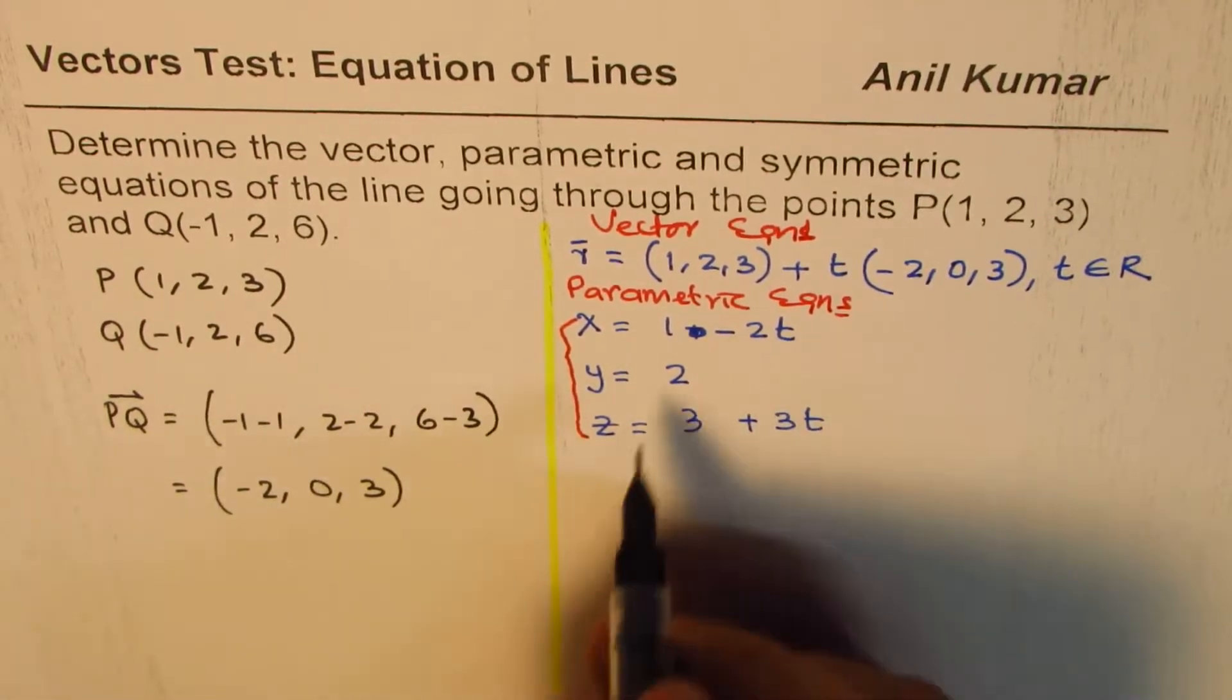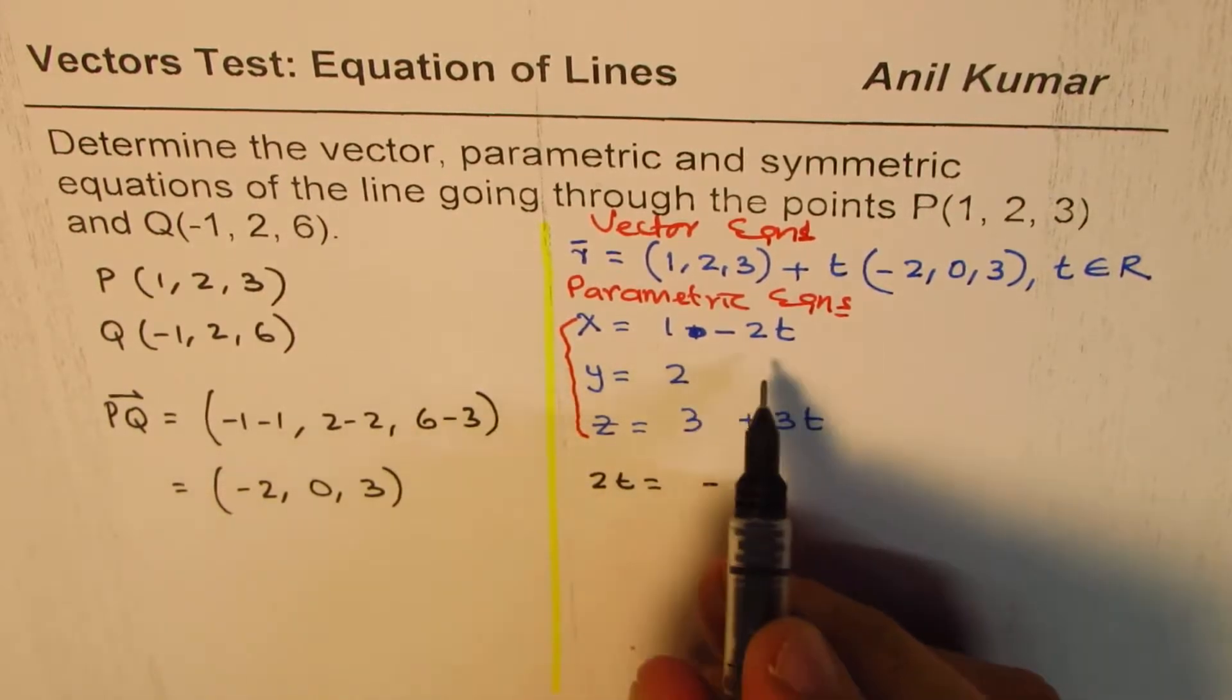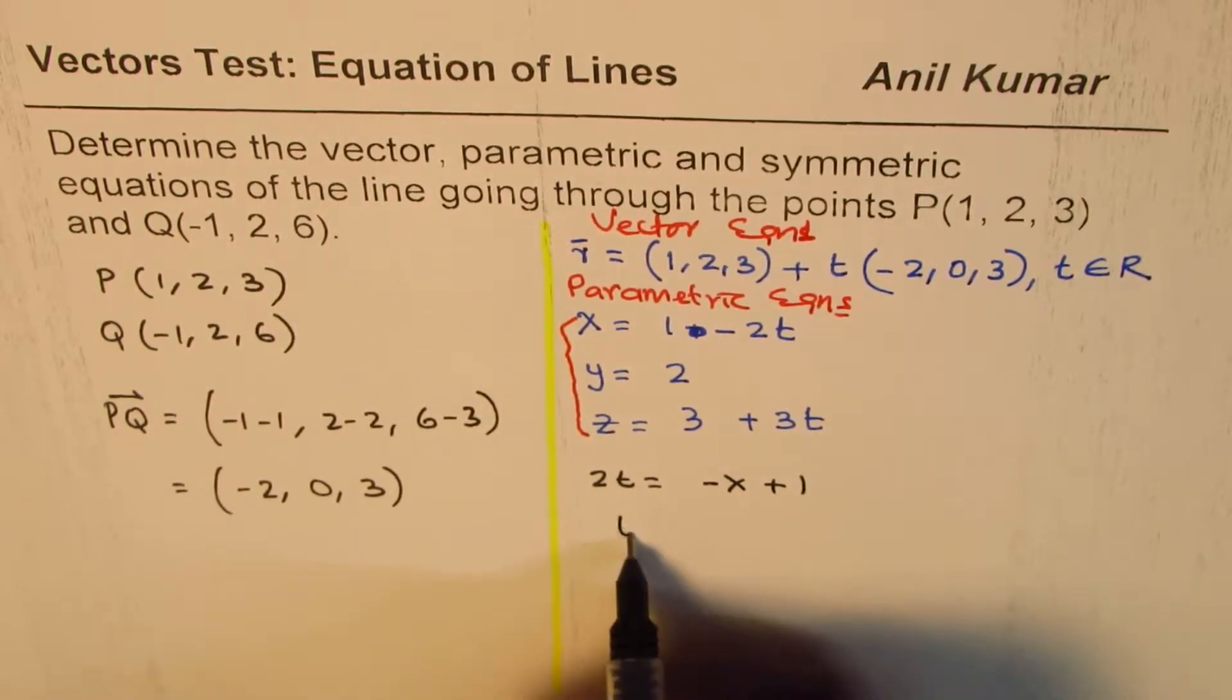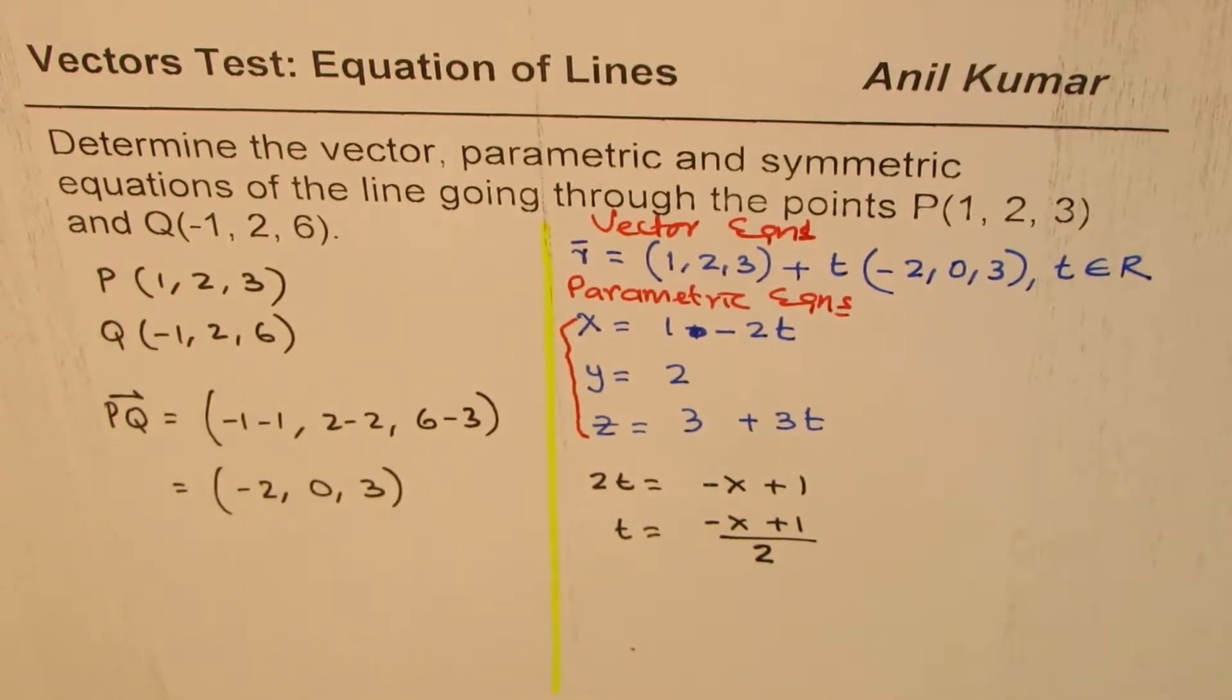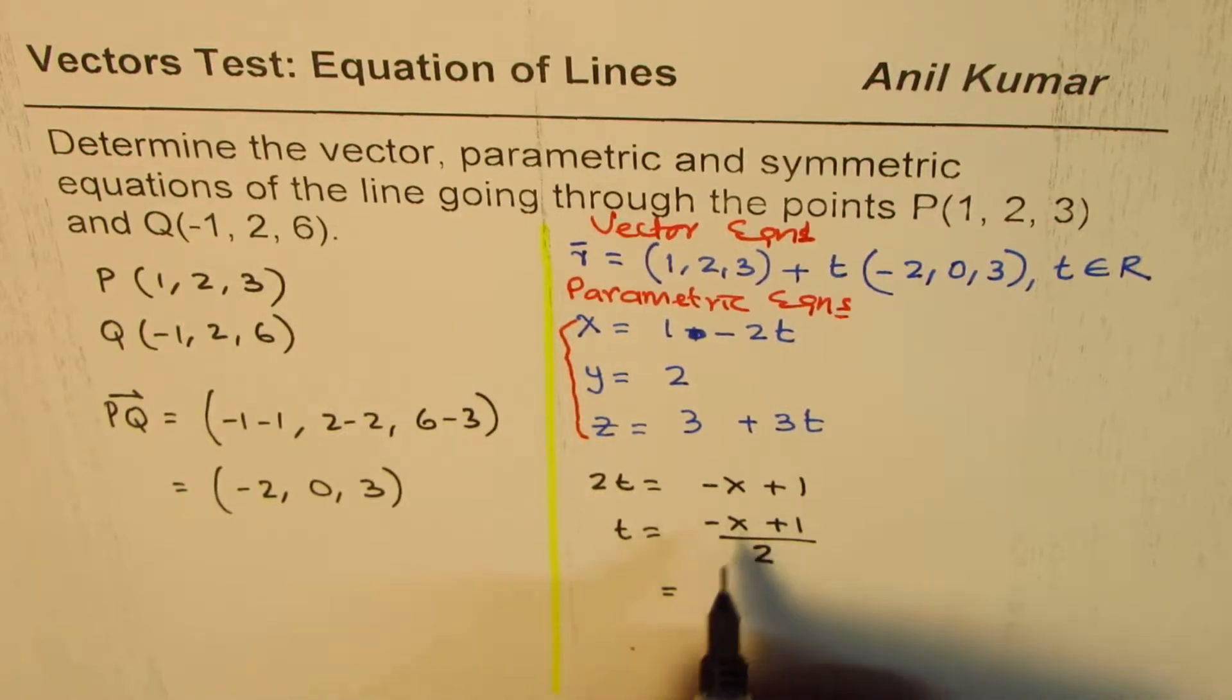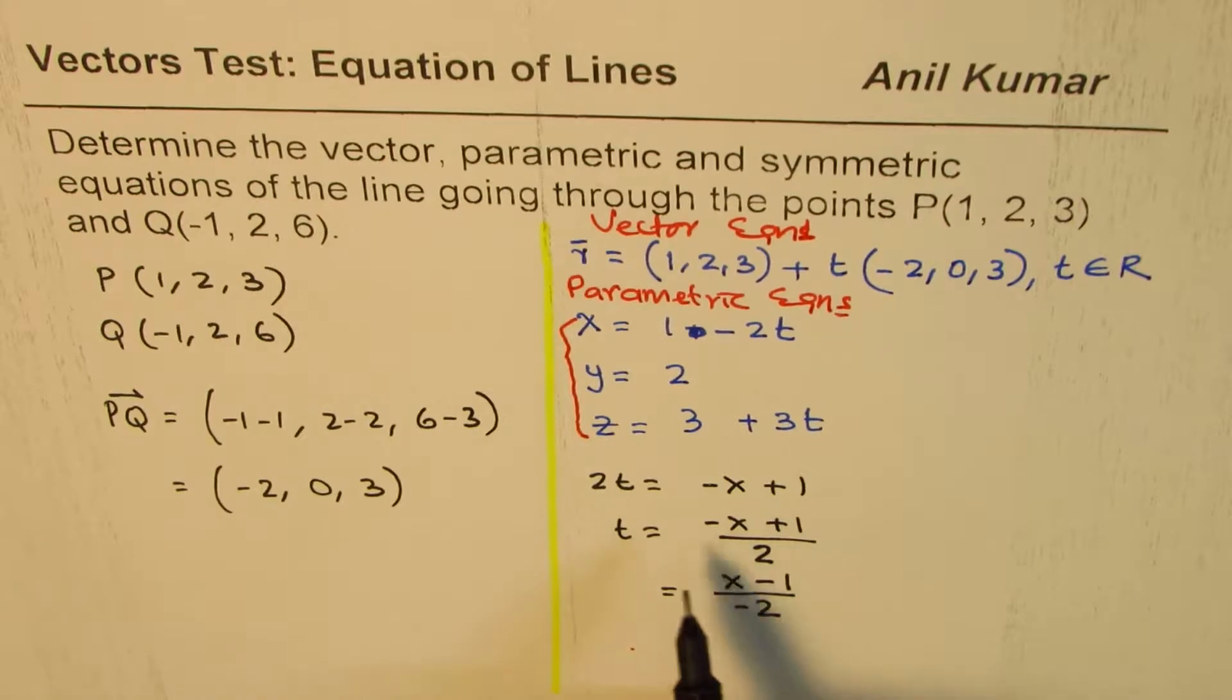So from the first equation, x equals 1 - 2t, I could write this as bringing 2t to the left side. So 2t equals -x + 1. Now, t will equal (-x + 1)/2. A better way is to keep x as always positive. So we can make that negative. So we could rewrite this as (x - 1)/(-2). I hope these steps are clear. So that is how you get the value of t.